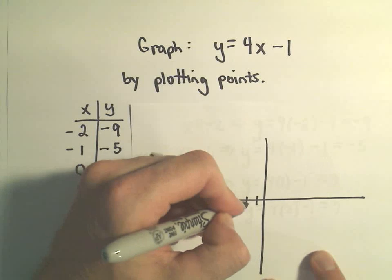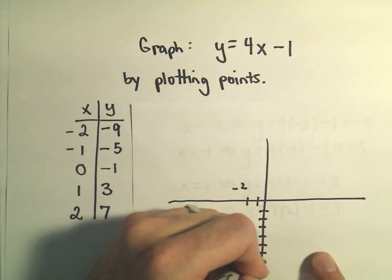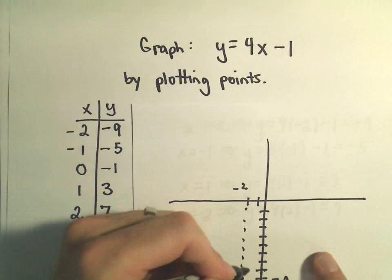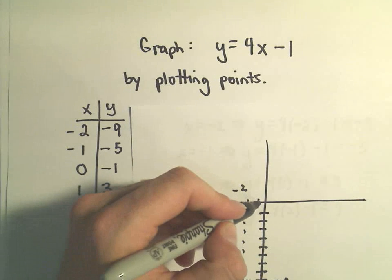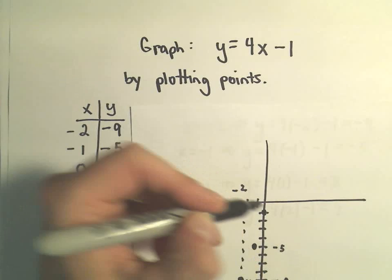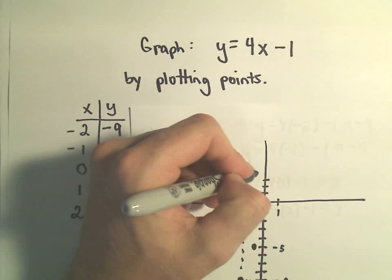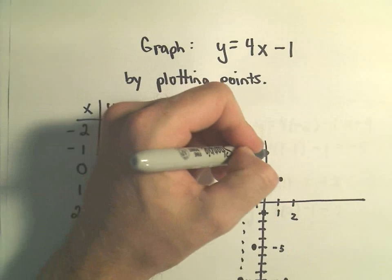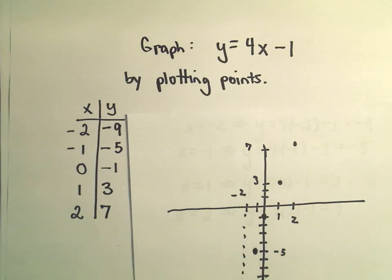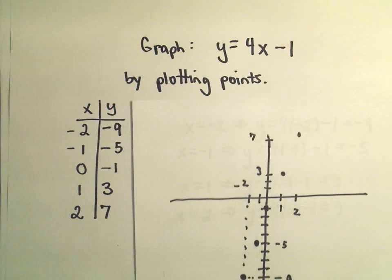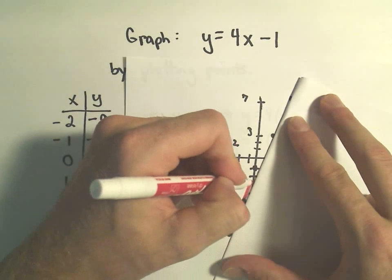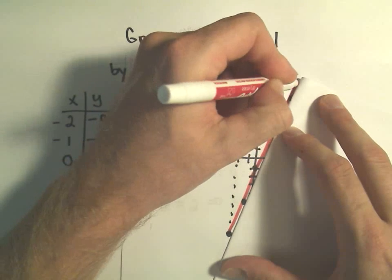It's a little rough by hand. So the first point is negative 2, negative 9. Here's negative 1 — we go down 5 units; there's another point. At x equals 0, we're getting negative 1 out. When you plug 1 in, we get 3 out. And when you plug 2 in, we're up at positive 7. The idea is if you were to graph this on graph paper and connect the dots, you would see that it makes a straight line through all the points.